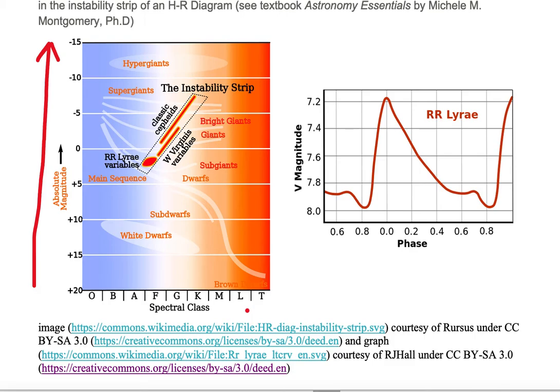Spectral class is based on surface temperature of the object, with surface temperature increasing to the left. On the diagram, we place objects based on their surface temperature and their luminosity, or we can compare their spectral class and their absolute magnitude.